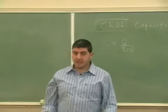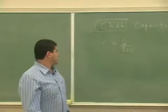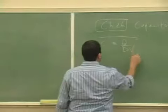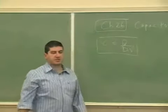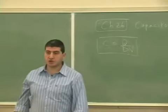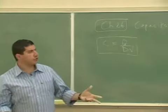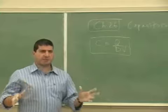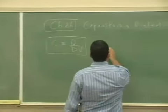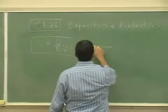C stands for capacitance, and it's defined as the charge divided by the potential difference. Let me show you three generic types of capacitors. You have a certain plate here.